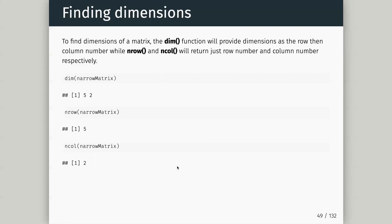The dimensions of a matrix: similar to how we have length to give us the length of a vector, we have a few functions for matrices. We have dim which gives us the rows and the columns — five rows, two columns. We have nrow which gives us five rows and ncol which gives us two columns.